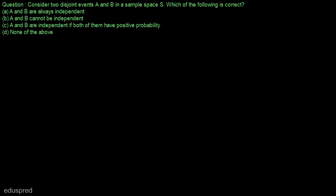In this video, I am going to solve this question. Consider two disjoint events A and B in a sample space S. Which of the following is correct? We are given that there are two events and these two events are disjoint, so that means the probability of A intersection B is equal to 0.